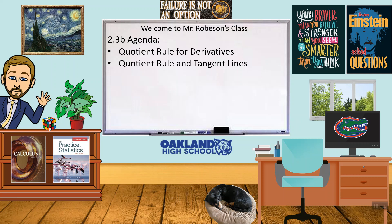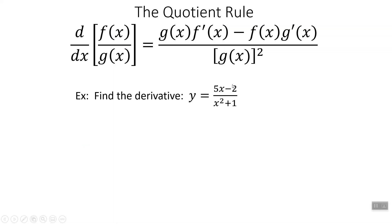Welcome back to Calculus with Mr. Robeson. Today we're looking at something called the quotient rule to take derivatives. Quotient means dividing, so when you're dividing two things. And then we'll apply that to tangent lines and slopes of tangent lines afterwards.